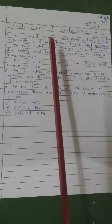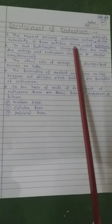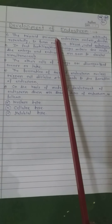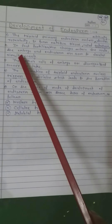The triploid primary endosperm nucleus, that is PEN, which is triploid in nature (thrice the N number), repeatedly divides mitotically to form nutritive tissue called endosperm, which is used for the developing embryo. In post-fertilization changes within the ovule, the embryo and endosperm are seen to develop simultaneously.